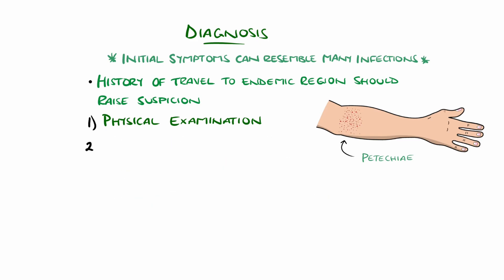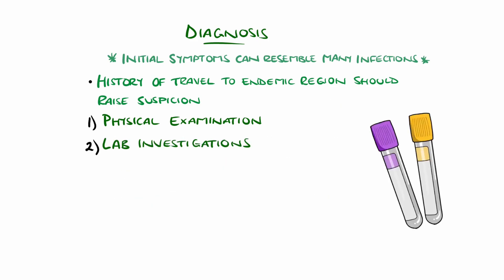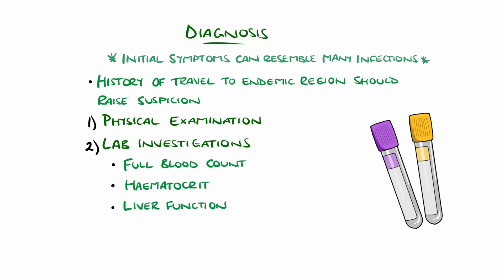Lab investigations include a full blood count looking for leukopenia and thrombocytopenia, which when combined with skin flushing is suggestive of dengue if the patient was recently in an endemic area. Hematocrit may rise due to dehydration, and liver function tests should include albumin, which is often low due to plasma leakage, as well as deranged enzymes with an AST to ALT ratio typically above two.